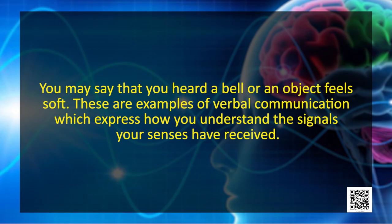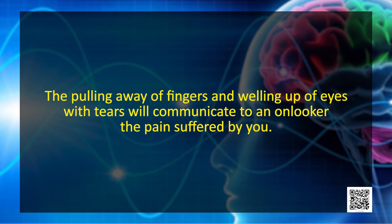The message is sent to someone who receives it using their primary signal system and then decodes it — that is, translates messages into understandable forms. For example, saying you heard a bell or that an object feels soft are examples of verbal communication expressing how you understand the signals your senses received. You can also respond at a non-verbal level: touching a hot stove, your fingers pull away quickly and your eyes well up with tears — communicating pain to an onlooker.